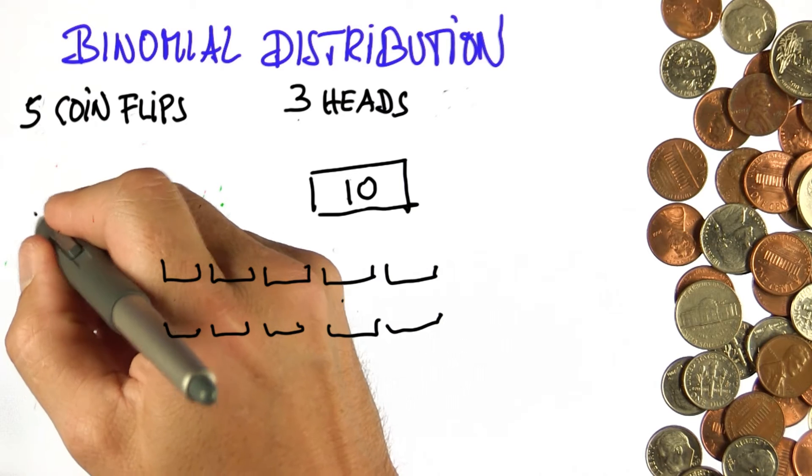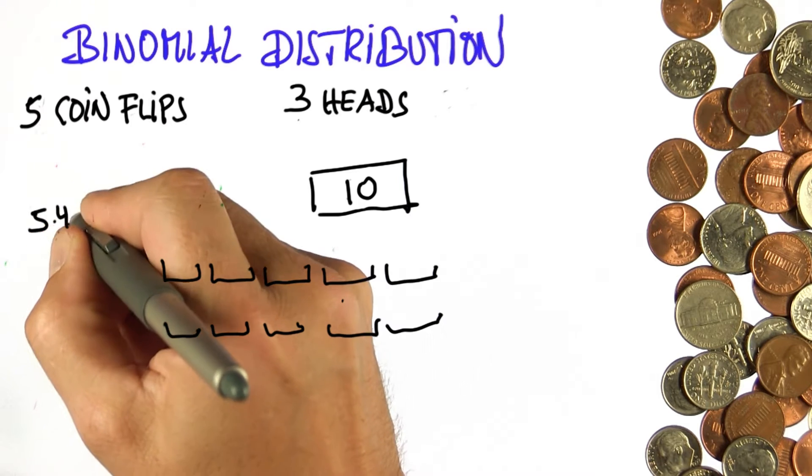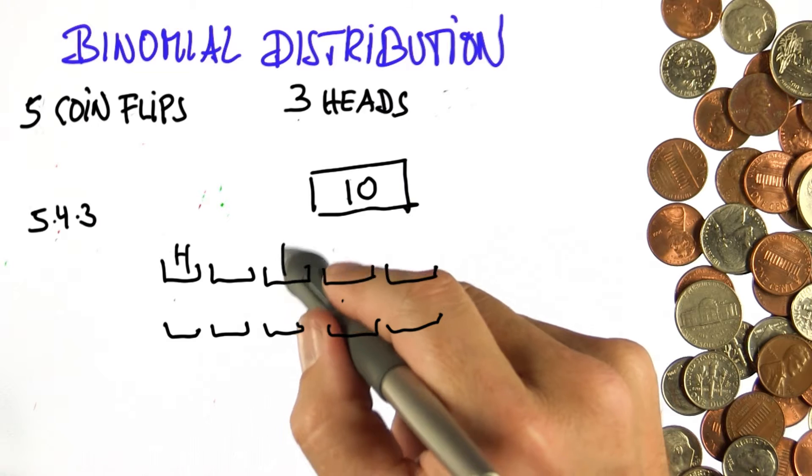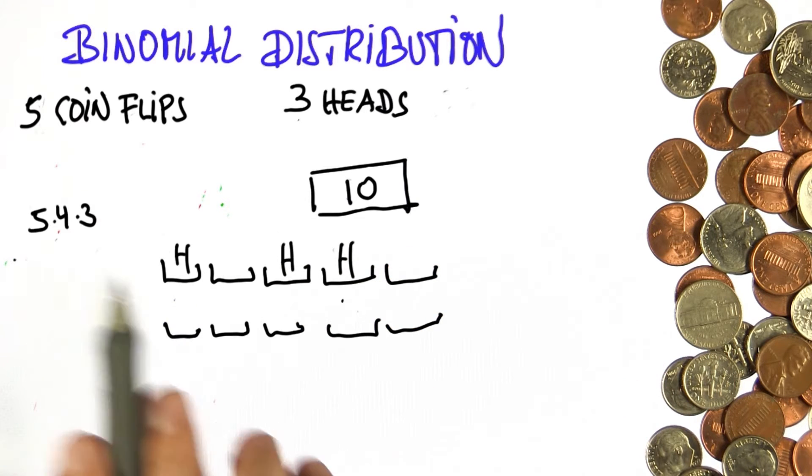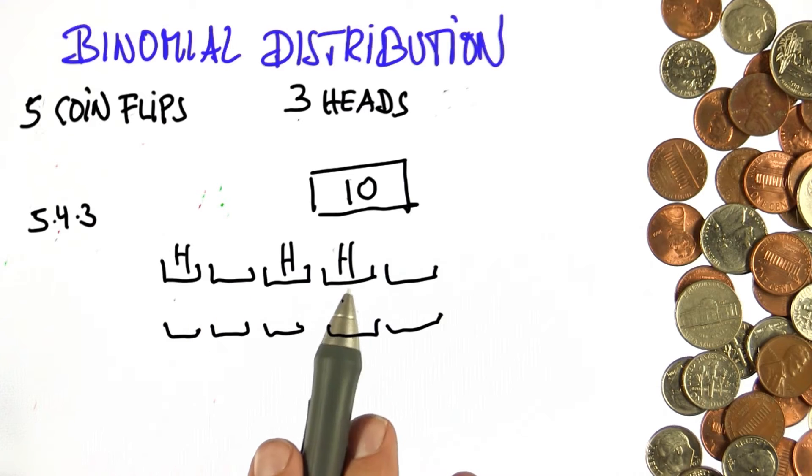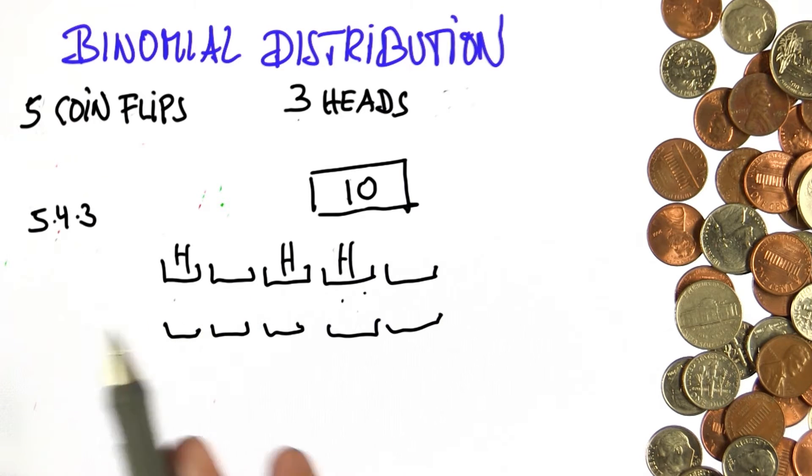Three heads, I can place 5 times 4 times 3. The first heads, the second, and the third. For the first, I have five positions. For the second, four. For the third, three are left. This gives me the combinatorics for those heads.